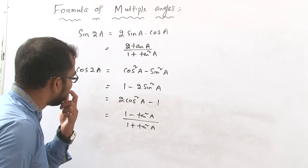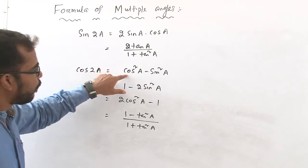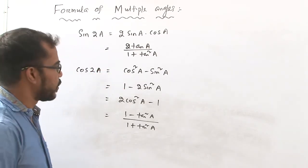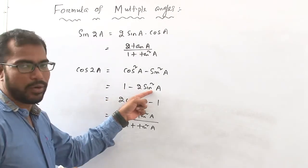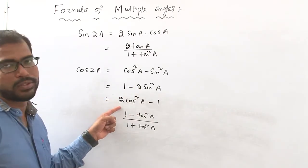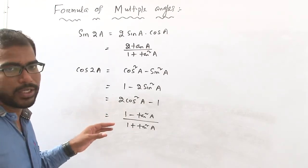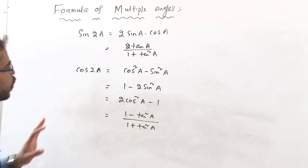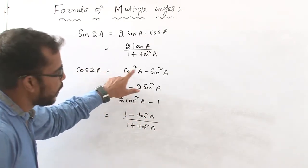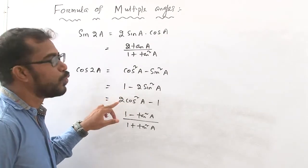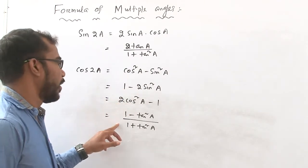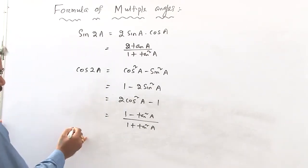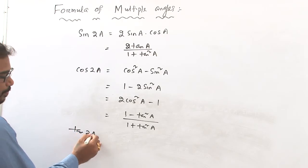To remember the formulas of cos 2a: the first formula is in terms of sin and cos both. The second formula is in terms of sin only. The third formula is in terms of cos only. And the last formula is in terms of tan — and it is a division formula. So cos 2a equals cos square a minus sin square a, or 1 minus 2 sin square a, or 2 cos square a minus 1, or 1 minus tan square a by 1 plus tan square a.